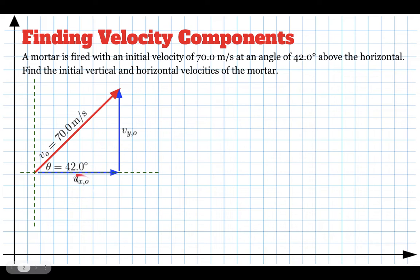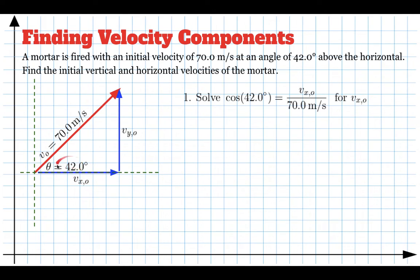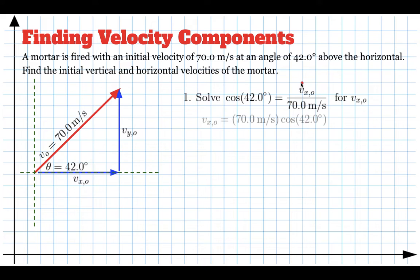The velocity in the x direction initial is adjacent to the angle. We know the angle is 42 degrees and we know the hypotenuse of this right triangle is 70. To find the adjacent side, we use cosine: cosine of the angle equals adjacent divided by hypotenuse. Multiply both sides by 70 and we get the velocity in the x direction initial, which works out to about 52 meters per second. So when this mortar is fired, it's moving 52 meters per second to the right.